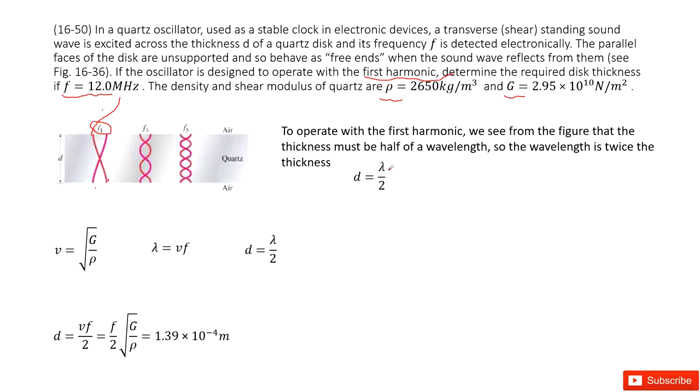So we find d is half of lambda, half of the wavelength. The next step, we need to find the wavelength. As we know, wavelength is v times f, where v is the wave speed and f is the frequency. The frequency is given, so we need to find v.